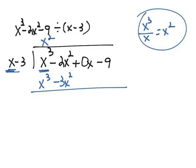Then, just like in elementary school, we subtract. -2x² minus -3x² is -2x² + 3x², which equals x². The x³ terms cancel out.